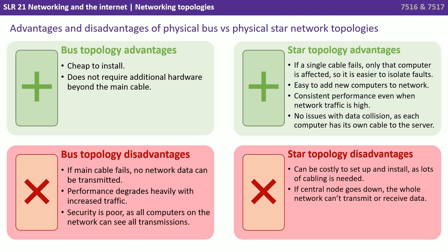Let's discuss the advantages and disadvantages of each. First, the bus topology. It's cheap to install and does not require additional hardware beyond the main cable. However, if the main cable fails, no network data can be transmitted. Performance degrades heavily with increased traffic, and security is poor, as all computers on the network can see all transmissions.